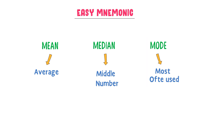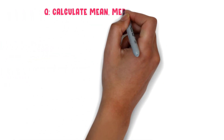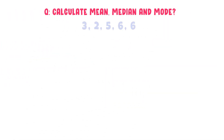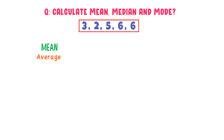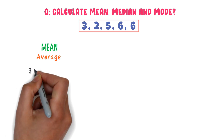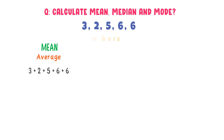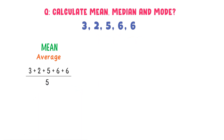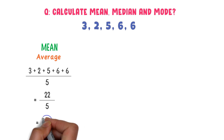Now let me teach you calculating these three variables. Calculate mean, median and mode for the following data set. We know that mean and average are the same thing, so I will add all these numbers: 3 plus 2 plus 5 plus 6 plus 6. There are 5 numbers present in this data set, so I will divide by 5. When I add these numbers using a calculator, I get 22. 22 divided by 5, I get 4.4.